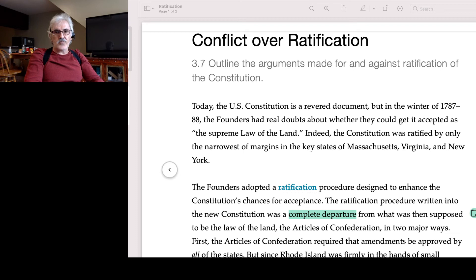Indeed, the Constitution was ratified by only the narrowest of margins in the key states of Massachusetts, Virginia, and New York. The Founders adopted a ratification procedure designed to enhance the Constitution's chances for acceptance. The ratification procedure written into the new Constitution was a complete departure - I highlighted that because this is the Orwellian language that I was telling you about - a complete departure from what was then supposed to be the law of the land, the Articles of Confederation, in two major ways.